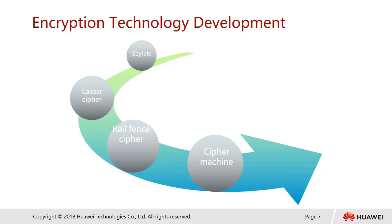The second one is called the Caesar cipher. Most of us are quite familiar with it. Caesar cipher is one of the simplest and most widely known encryption techniques. It is a type of substitution cipher in which each letter in the plain text is replaced by a letter a fixed number of positions down the alphabet. For example, with a left shift of three, D would be replaced by A, E by B, and so on. To decipher the message, you need to know how many characters have been shifted left or right.